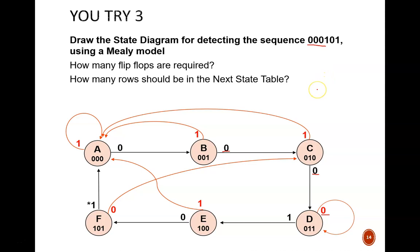Three flip-flops are required to handle the three bits in the state codes. Also, 12 rows will be in the next state table, because there are six nodes with two arrows leaving each. This concludes our examples of state diagrams for sequence detecting sequential circuits.